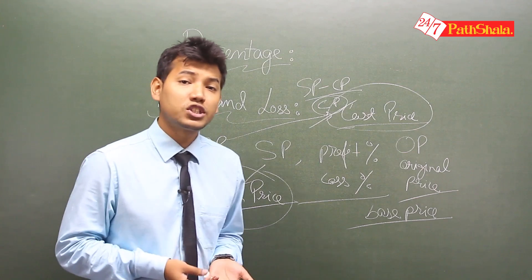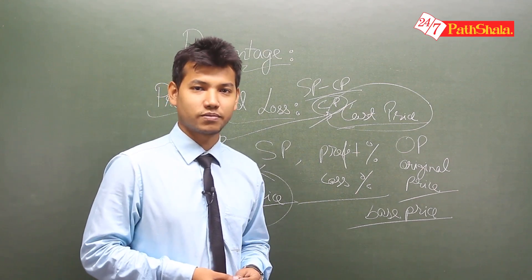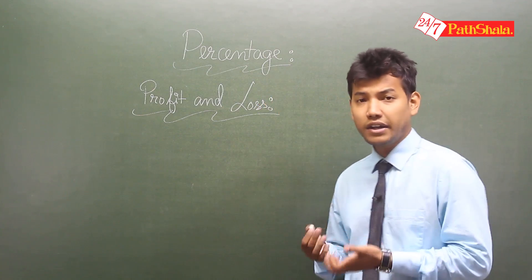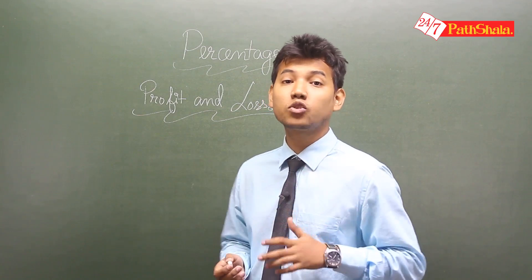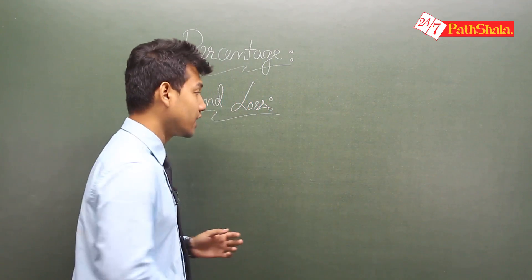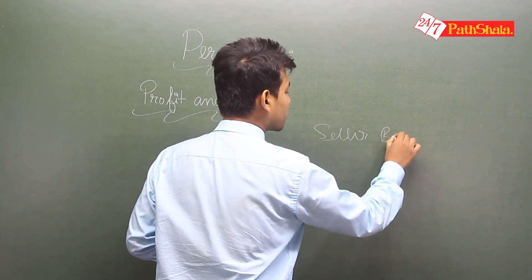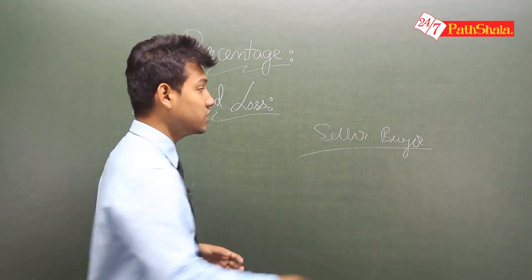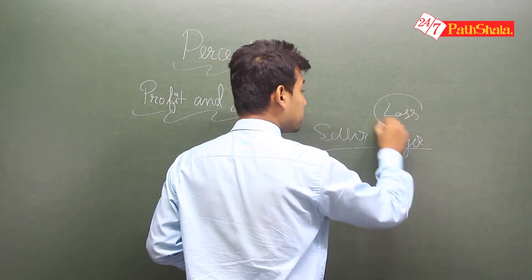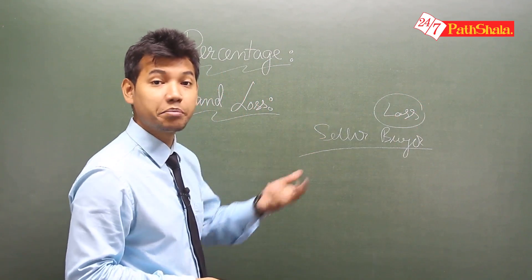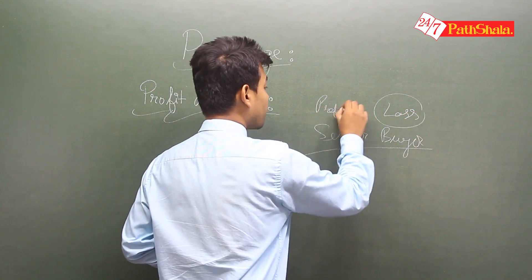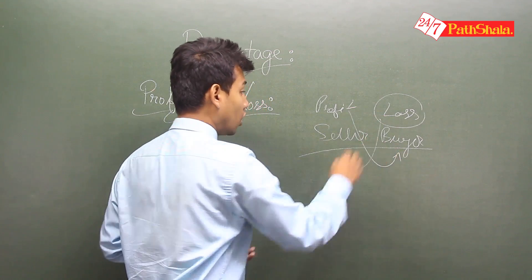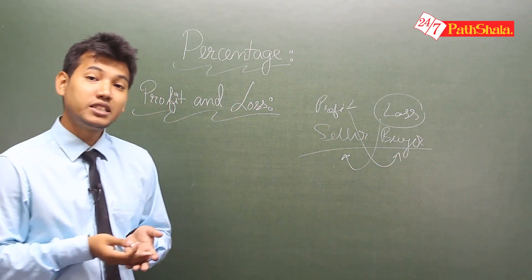Let's look at how questions come in this chapter. Profit and loss can be defined as something relative — there is a seller and a buyer. If the buyer is incurring a loss by buying something, then the seller is gaining a profit, and vice versa. So profit and loss is a relative concept.